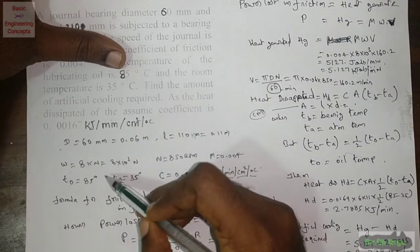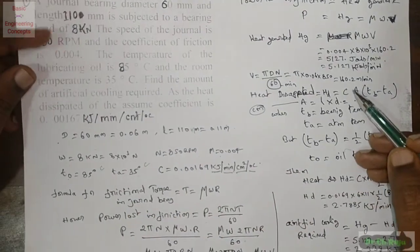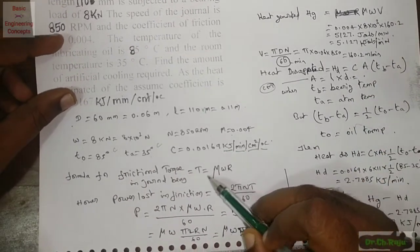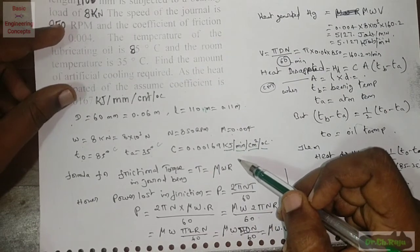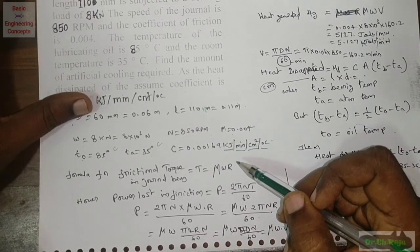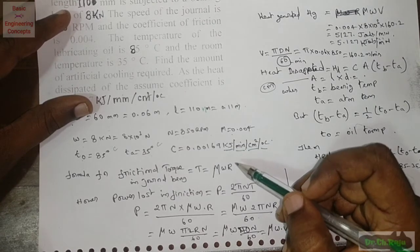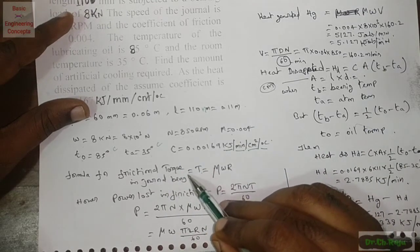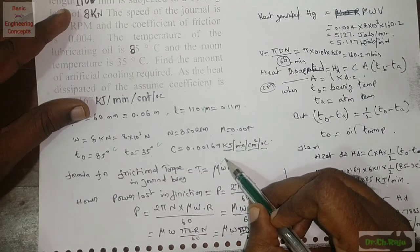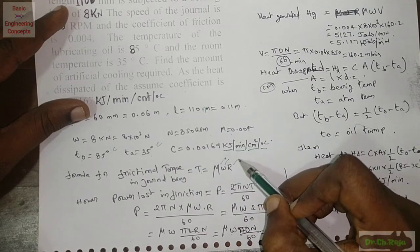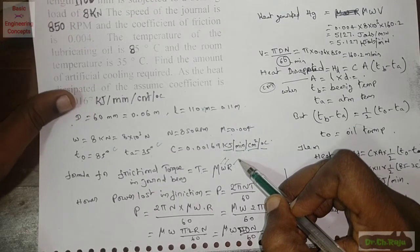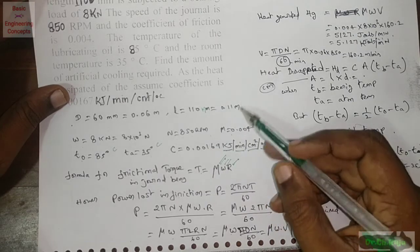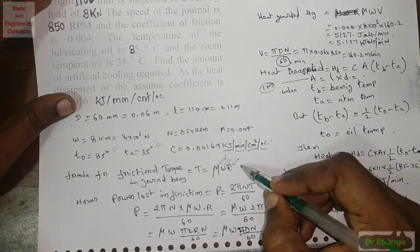The formula for frictional torque in the journal bearing is T = μWR. For a thrust bearing it is T = (2/3) μW(R³ - r³)/(R - r). Here for the journal bearing, frictional torque equals μWR, where μ is the coefficient of friction, W is the load, and R is the radius of the journal. All values are given, so we can calculate the torque directly.